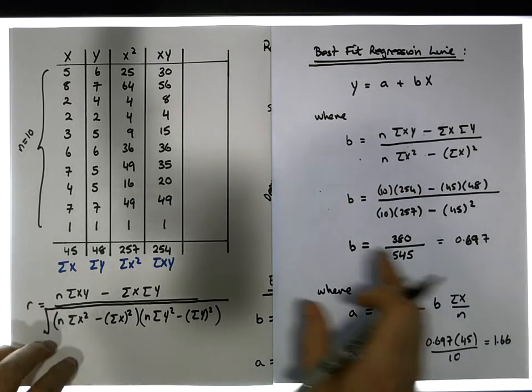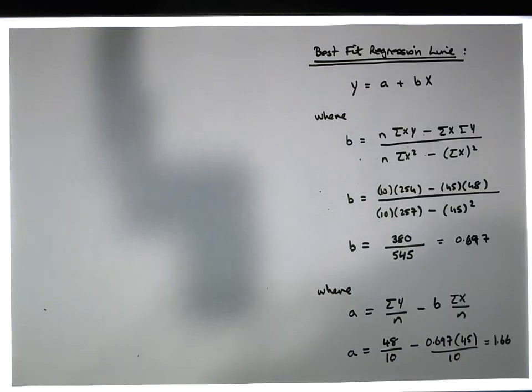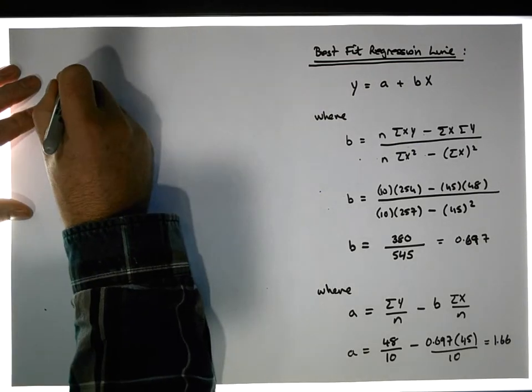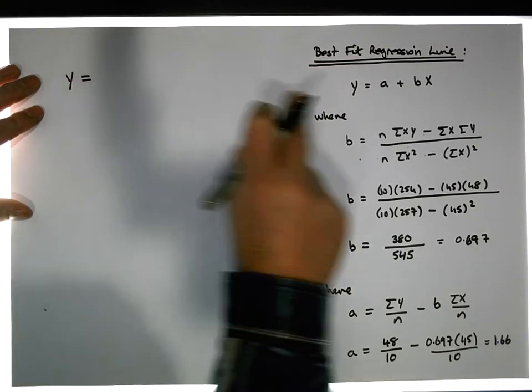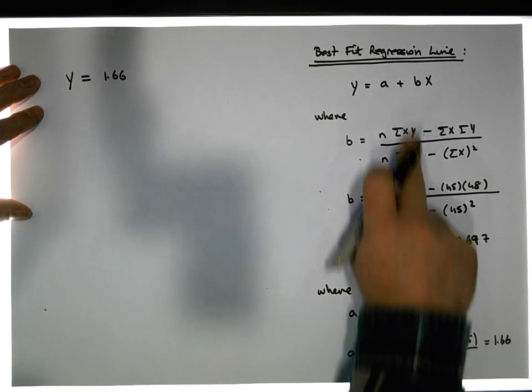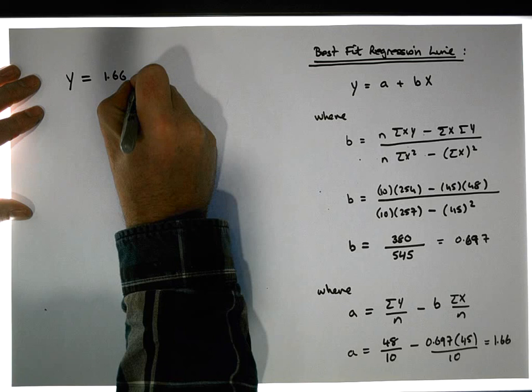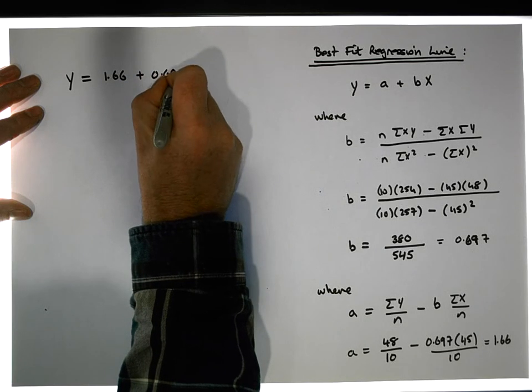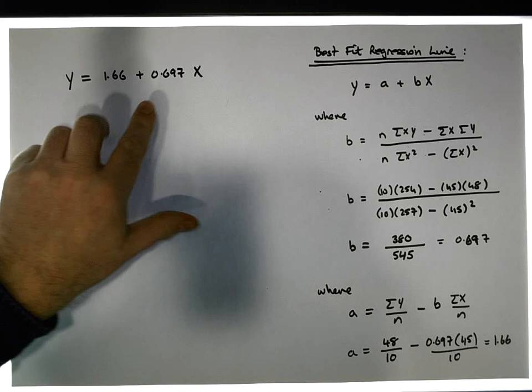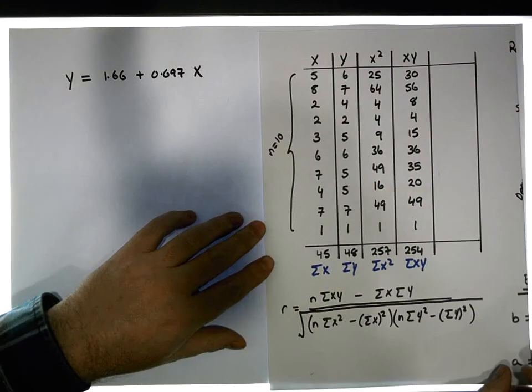So that's how we calculate our regression line. It's actually straightforward enough. What we know now is that the y, the dependent value, is equal to a, it's equal to 1.66 plus the b value, so it's plus 0.697 times our x's.